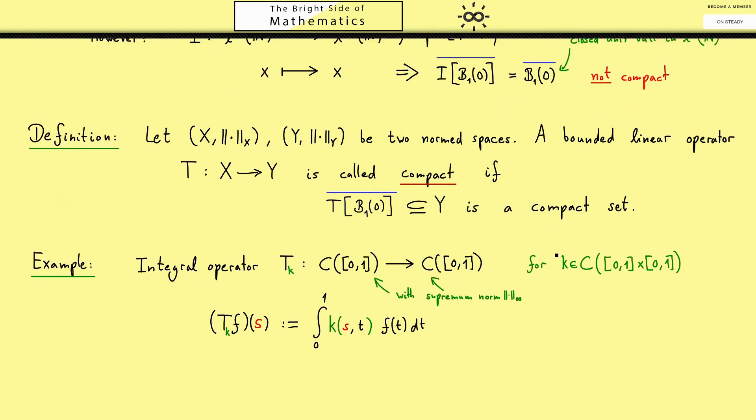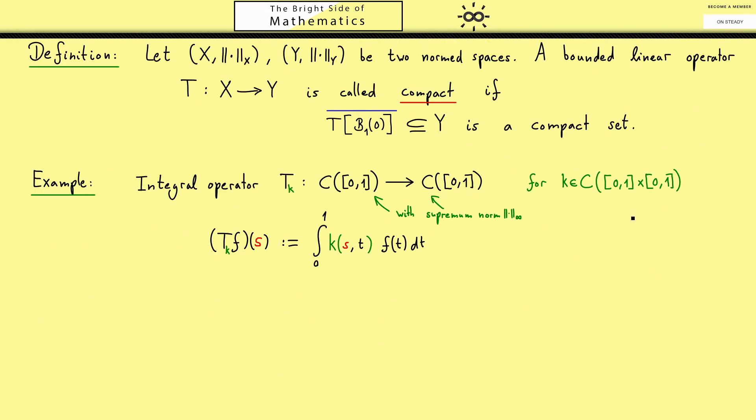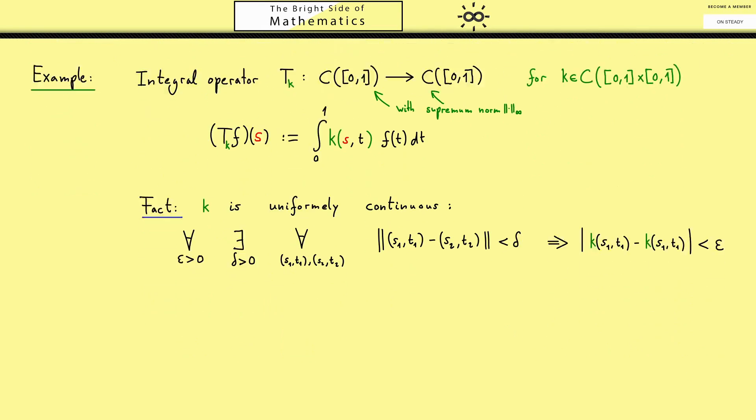Now since the function k goes into the definition of T, I put it into the index. Then let's check if T_k is indeed a compact operator. An important fact we will need is that the function k is defined on a compact set, so it's not just continuous, it's uniformly continuous. For all epsilon greater than 0, there exists a delta greater than 0, such that for all points, if the distance is less than delta, the distance of the images should be less than epsilon.